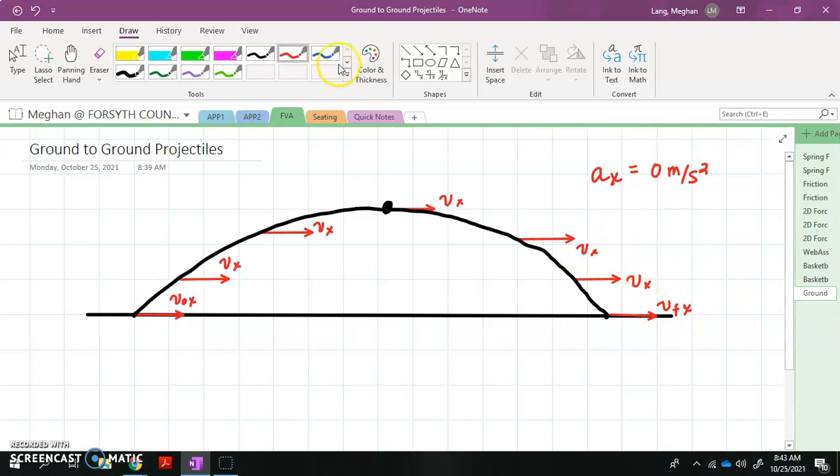All right. We also know that in the Y direction, our acceleration is gonna be negative 10 meters per second squared. So in the Y direction, our object is actually in free fall. It's doing the same thing that it did in unit one when I threw it straight up and it came straight back down.